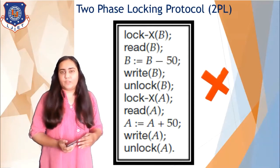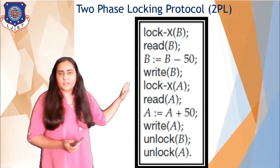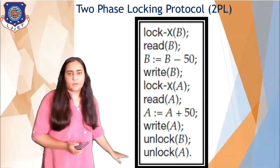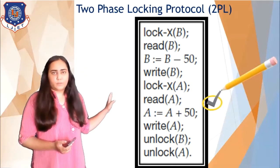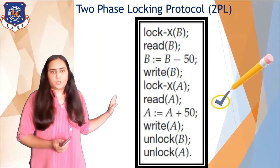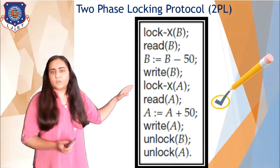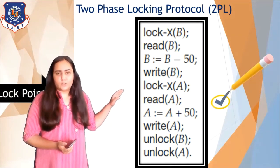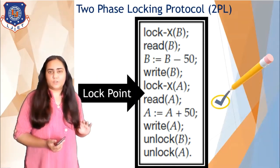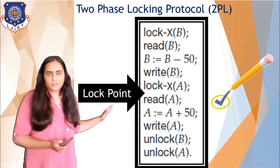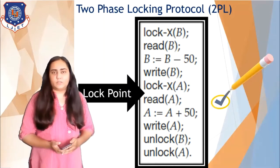Here is an example where the two-phase locking protocol is followed. You can see there is lock XB, then lock XA, and then at the end unlock B and unlock A — so the unlocking process is done after all locks are obtained. This transaction follows the two-phase locking protocol. The point at which the transaction obtained its last lock is known as the lock point. The lock point is the point after which the transaction does not obtain any more locks and can only unlock.